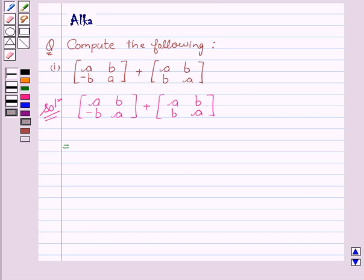On adding two matrices, we get A plus A, B plus B, minus B plus B, A plus A.